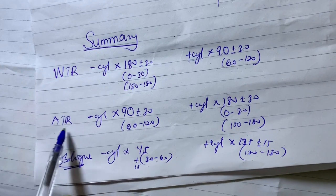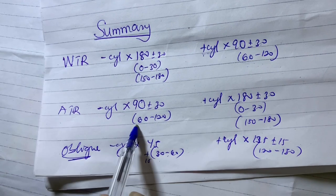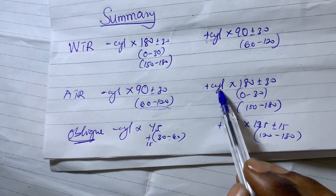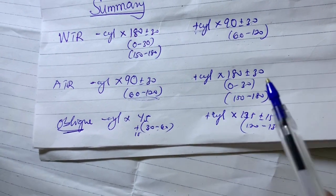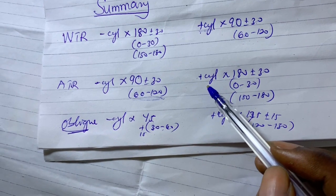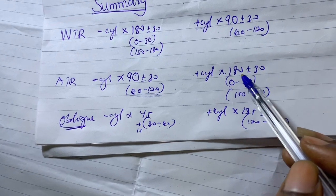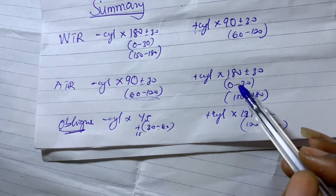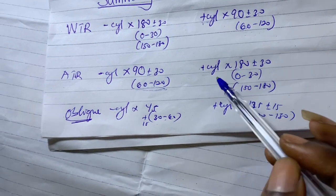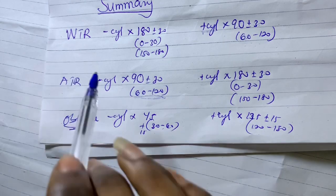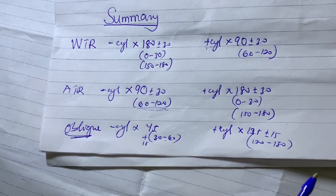For against-the-rule: if it is minus cylinder, the axis is 90 plus or minus 30 — so between 60 and 120. For plus cylinder form, check if the axis is 180 plus or minus 30, meaning between 0 and 30 or between 150 and 180. If the axis lies in those zones with a plus cylinder, it qualifies as against-the-rule astigmatism.